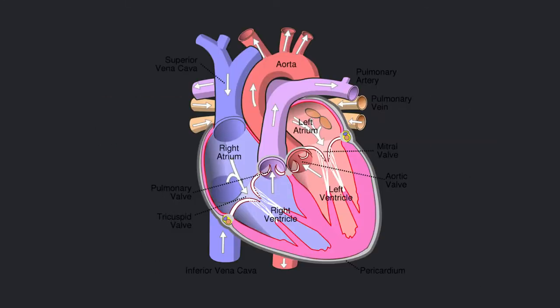In order to better understand what a heart murmur is, let's take a look at the anatomy of the heart. The heart has four chambers: the right atrium and the left atrium, the right ventricle and the left ventricle. These chambers are used to pump blood through the heart. I have a video on how blood pumps through the heart, which you can see by clicking on the link in my description box.